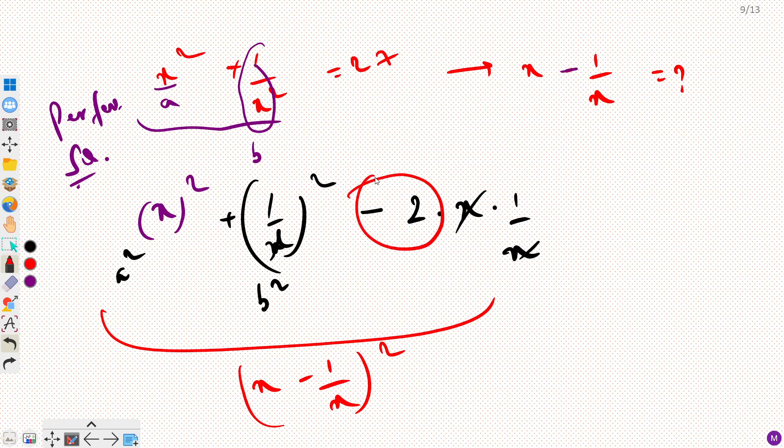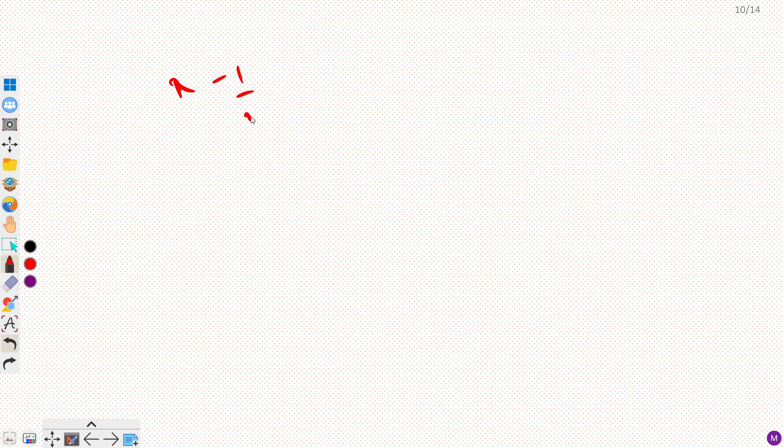So we will have to subtract minus 2 here as well from right hand side. So 27 minus 2 is 25. So our question becomes x minus 1 by x whole square is 25. Now this is a very easy question.